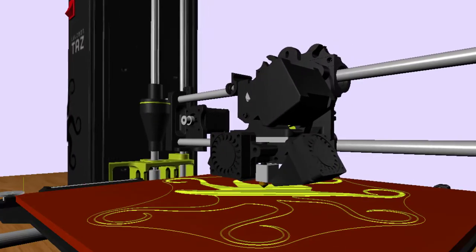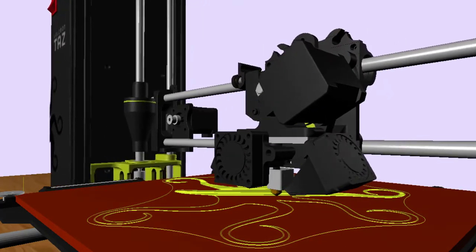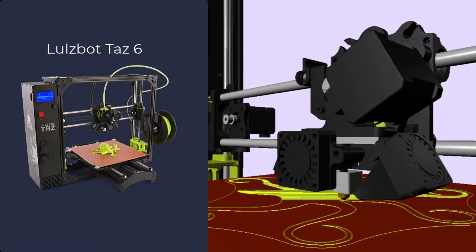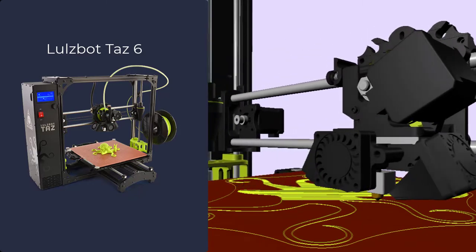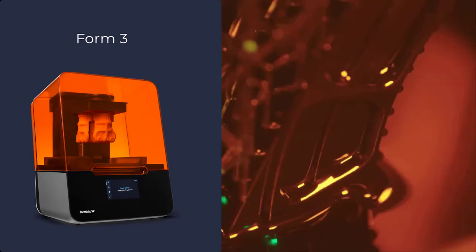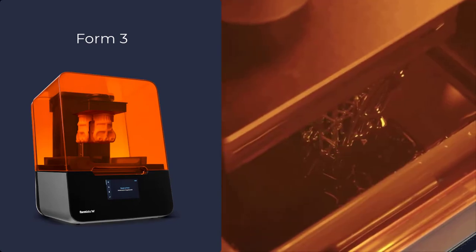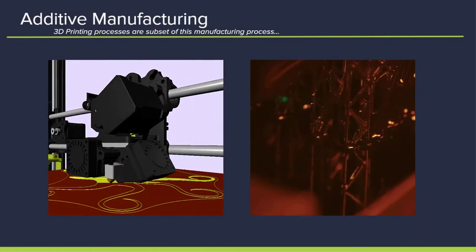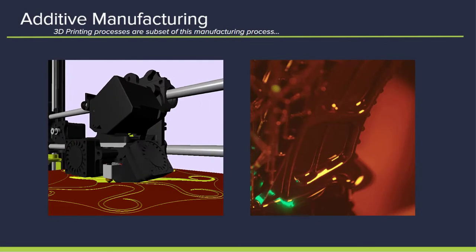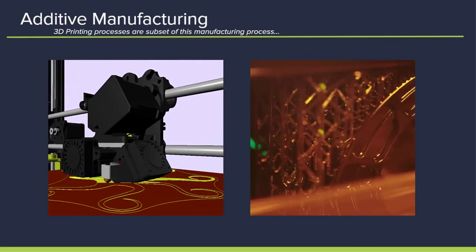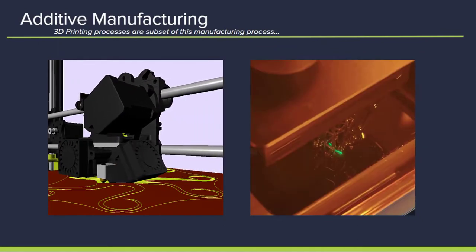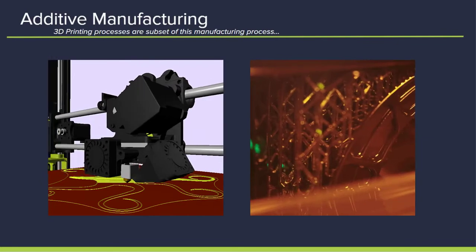Some, like the one I'm showing, use the melting or softening of materials to extrude layers — such as this Lulzbot TAZ-6, which is actually one of our self-service 3D printers. Others cure photoreactive resins with a UV laser, such as our Form 3, one of our high-definition 3D printers. The one thing they all have in common: they're all subsets of a process known as additive manufacturing — a process by which you grow a three-dimensional object one super fine layer at a time, each layer bonding to the preceding layer.